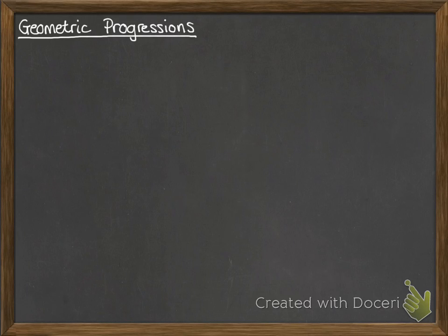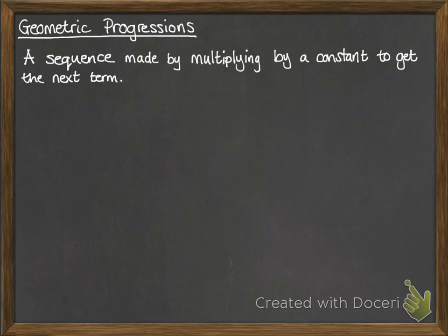Last lesson was looking at arithmetic progressions, and this is now moving on to geometric progressions. The difference between them: arithmetic progressions had a constant difference between each term, so you were adding on a number each time. This time you're making your sequence by multiplying by a constant each time.